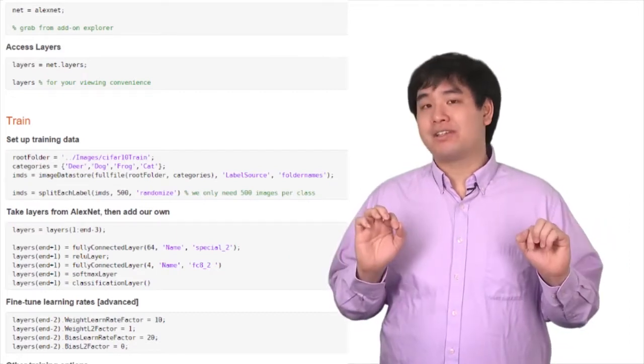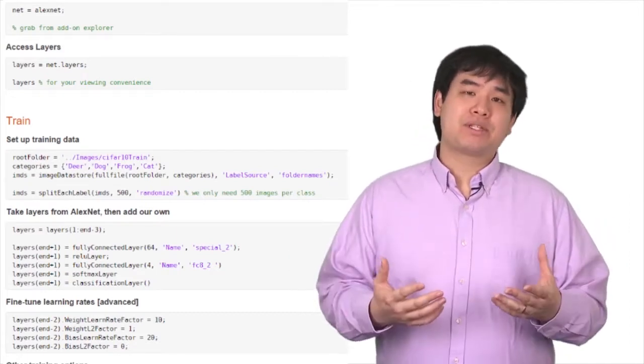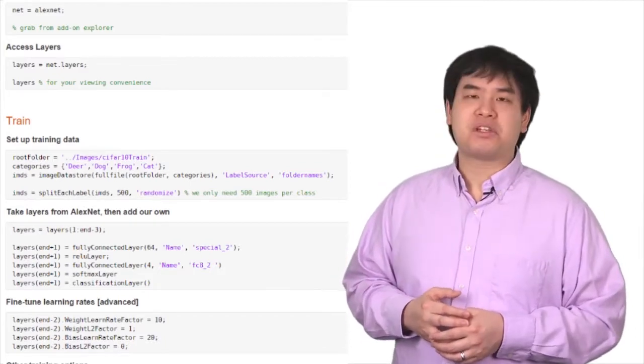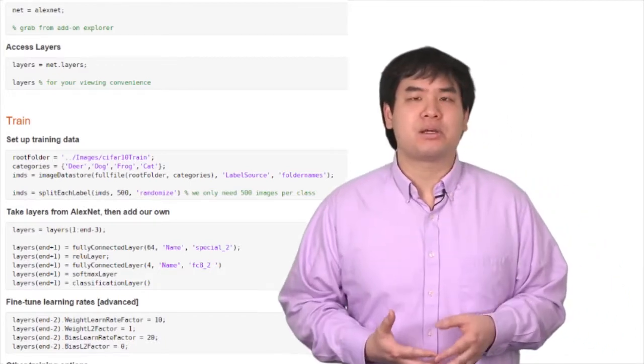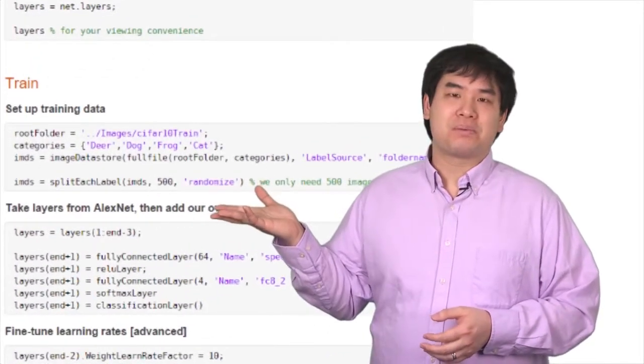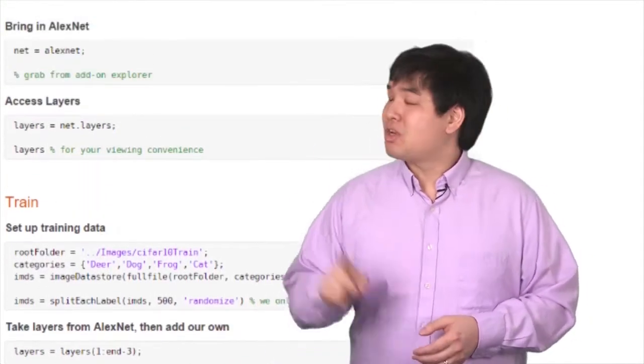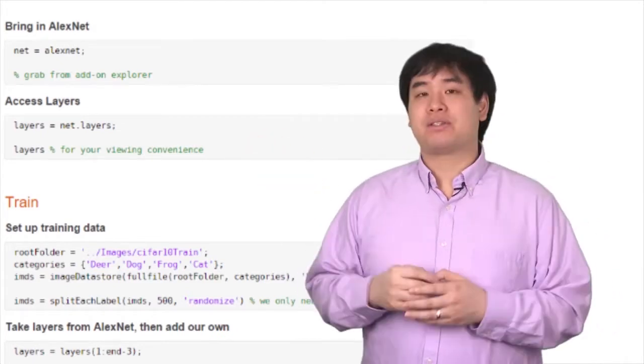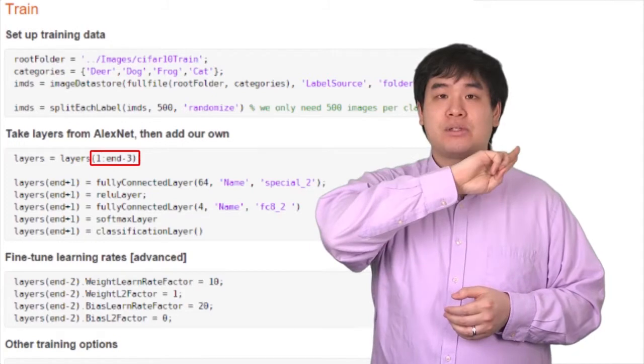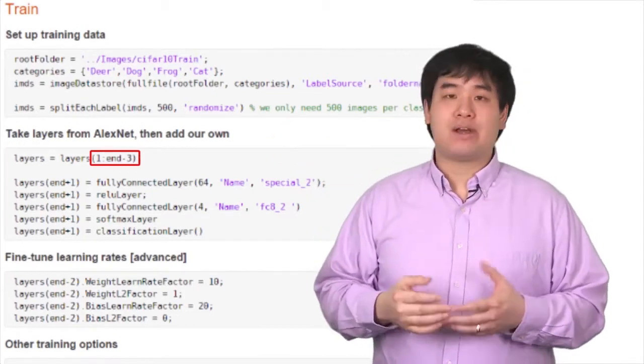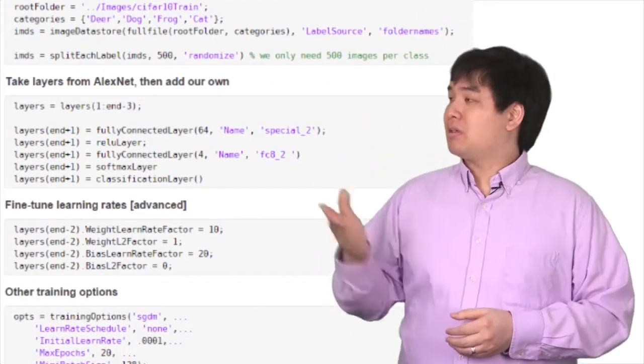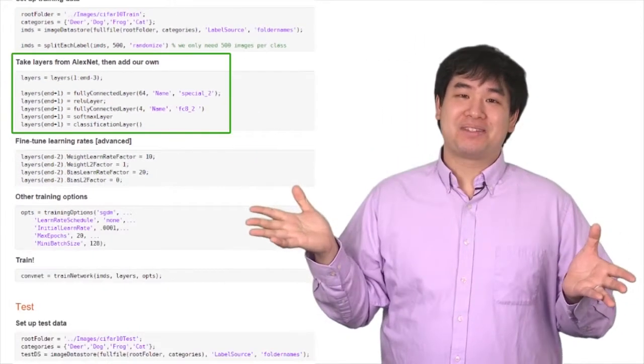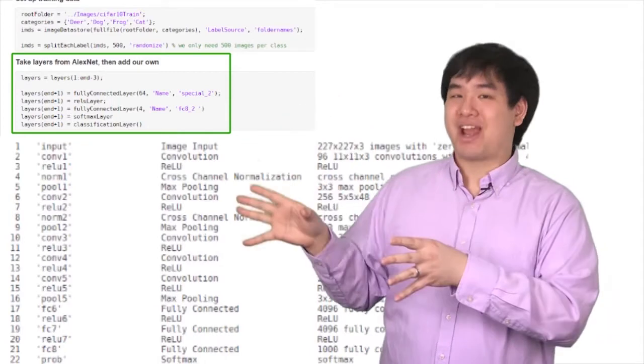So, now we're tasked with creating the layers of our neural network, but wait, if we're using an existing network that already has pretty good layers setup, shouldn't we just reuse some of that work? Well, that's exactly right. Note this line of code where we essentially just copy over the layers from AlexNet. However, we trim off the last three layers which told AlexNet to classify 1,000 objects, and we replace it with our own code where we're classifying just four. Now, compare this with trying to come up with all these layers from scratch.